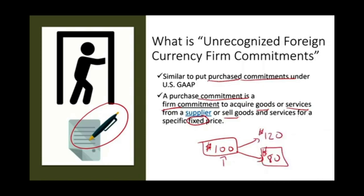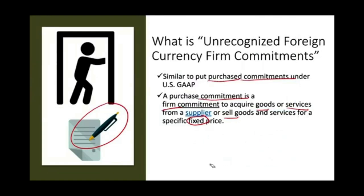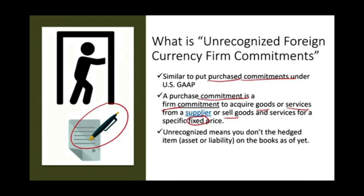So how does a firm commitment factor into this picture? You're going to sell goods and services and have a foreign currency future commitment — you may be receiving foreign currency or need to pay in foreign currency. But you didn't actually buy or sell yet; you just made a commitment. That's what 'unrecognized' means: you don't have any asset or liability on the books — no receivable, no payable exposure. You're just hedging your commitment to protect it.